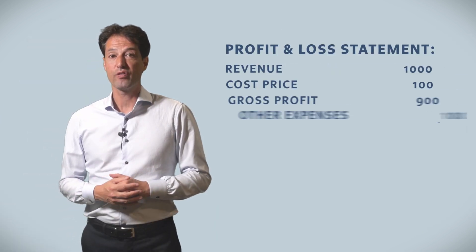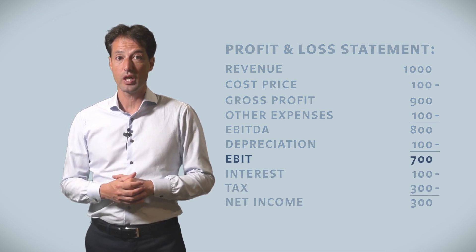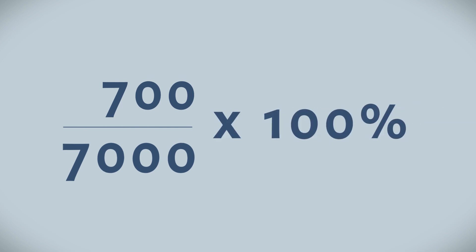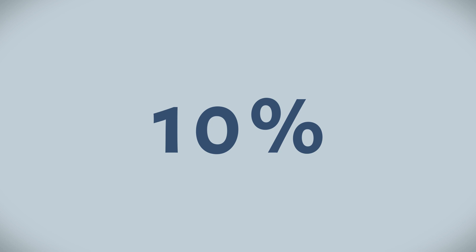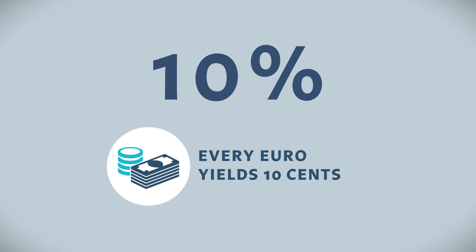Step two. In order to calculate the financial performance, we divide the operating result of 700 by the invested capital of 7000. This gives you the return on invested capital. In euros, on every euro invested in the assets on the left-hand side, the capital holders on the right-hand side will receive 10 cents — so 10 cents on the euro.